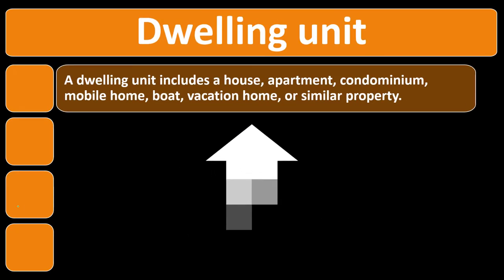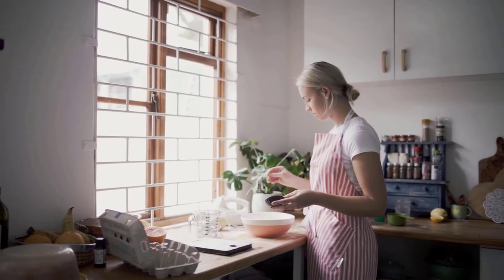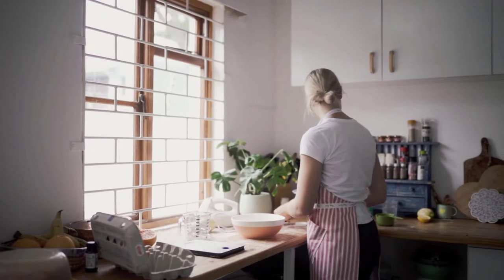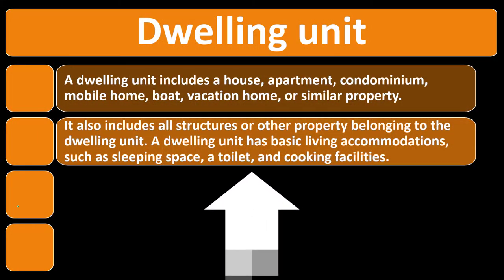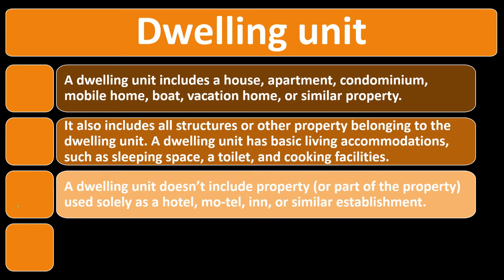A dwelling unit includes a house, apartment, condominium, mobile home, boat, vacation home, or similar property — pretty expansive. If it has the basic stuff you need like a kitchen and a toilet, you might qualify. It also includes all structures or other property belonging to the dwelling unit. A dwelling unit has basic living accommodations including a sleeping space, a toilet, and cooking facilities — even if they're all in the same area.